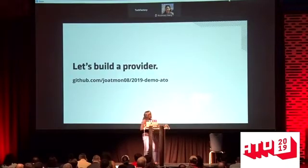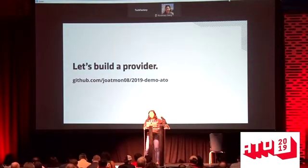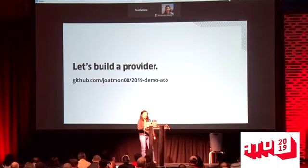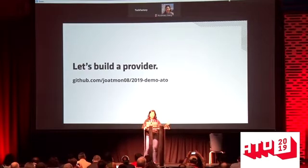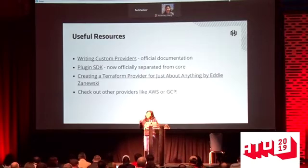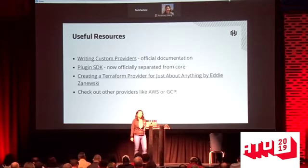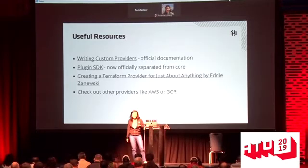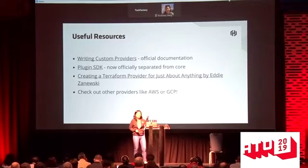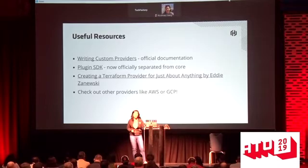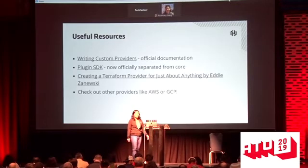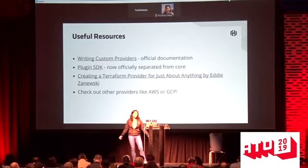You can take a picture of this GitHub repository — it has all these demos. There are also independent repositories with submodules. If you want to build your own provider, some useful resources: there's the official 'writing custom providers' documentation, the plugin SDK GitHub which is now officially separated from core, a great talk by Eddie from DigitalOcean about testing and the DigitalOcean provider, and the AWS or GCP providers which have good patterns and examples.